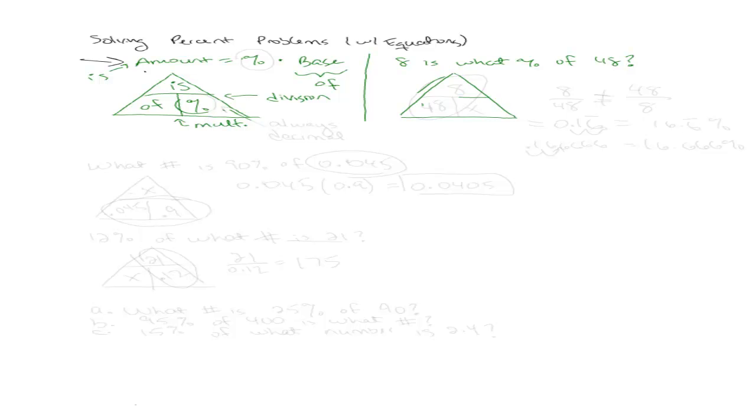8 is what percent of 48? I don't have my percent, so that's going to be my x. My is is 8, and my of is 48, because we're finding out 8 out of 48. Then I take these two numbers and do whatever operation the triangle tells me to do. The triangle tells me that between the is and the of, I divide. So I'm going to divide 8 by 48.